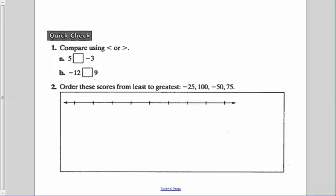Now we can look at our quick check. You should have that part done. We're looking at inequality signs between 5 and negative 3. Well, 5 on a number line would be to the right of negative 3, so 5 would be greater than negative 3. Then I have negative 12 and 9. On a number line, negative 12 would be to the left of 9, so it's going to be less than.